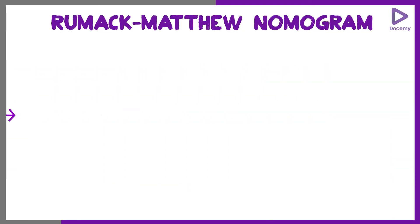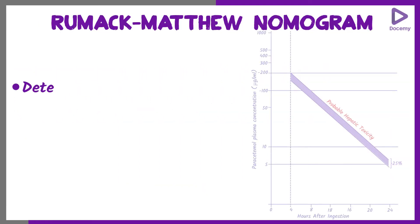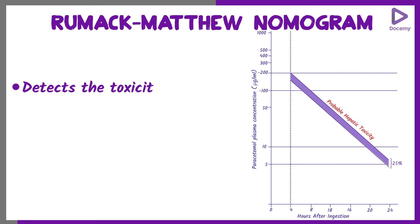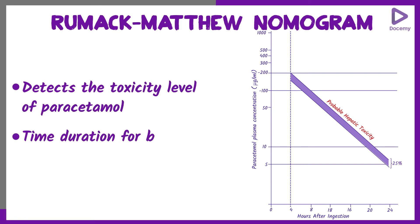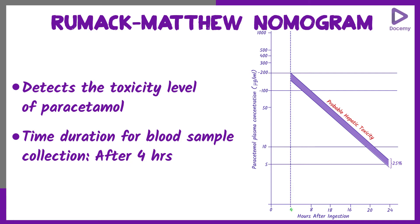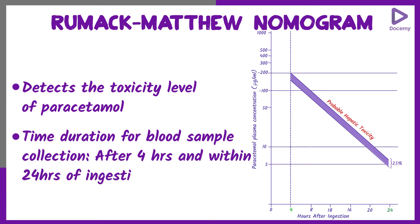The Rumack-Matthew nomogram is a nomogram which tells you the toxicity level of paracetamol. The blood sample is taken after four hours of ingestion and within 24 hours of ingestion, and plotted on the Rumack-Matthew nomogram.